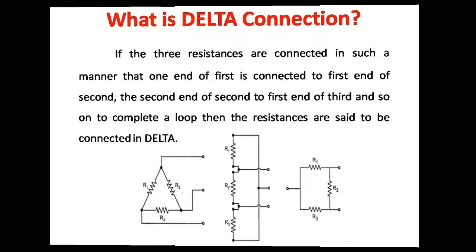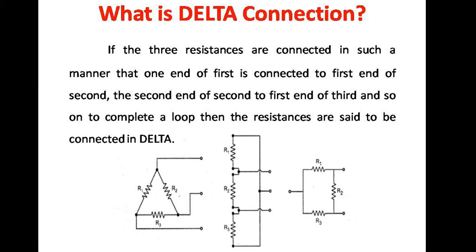Now let us see how three resistances can be connected in delta connection. If the three resistances are connected such that one end of the first is connected to the first end of the second, and the second end of the second to the first end of the third, and so on to complete a loop, then the resistances are said to be connected in delta fashion.